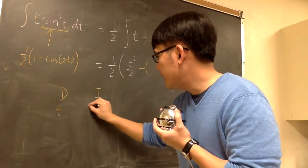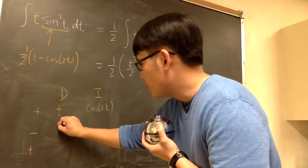Differentiating t, we get 1. And then one more time, we get 0. So we stop.